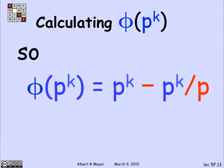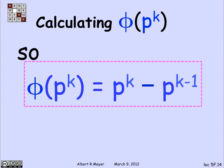Namely, phi of p to the k is p to the k minus p to the k over p, which can also be expressed in a more standard form, p to the k minus p to the power k minus 1. And that knocks off the story of phi of p for powers of primes.